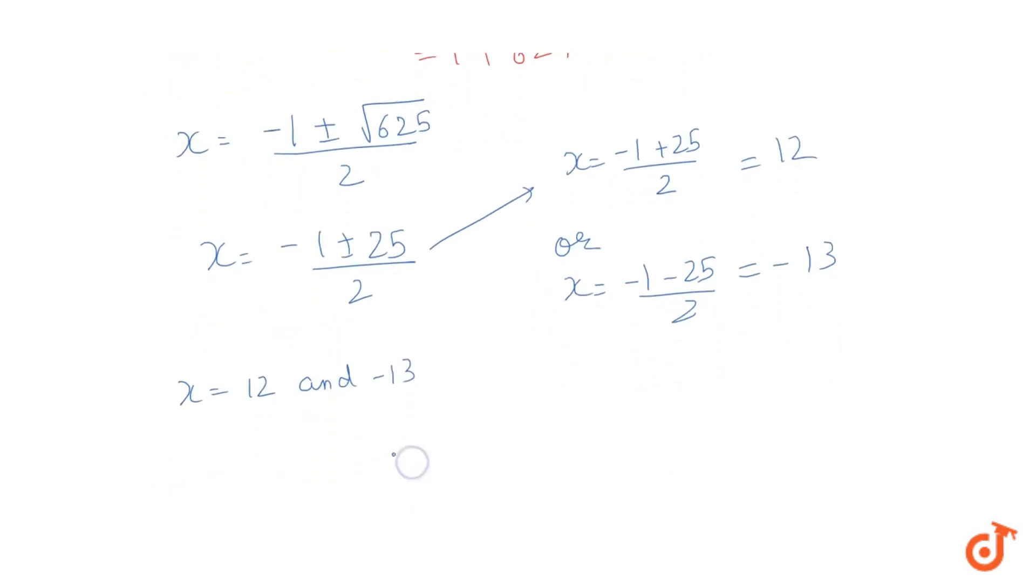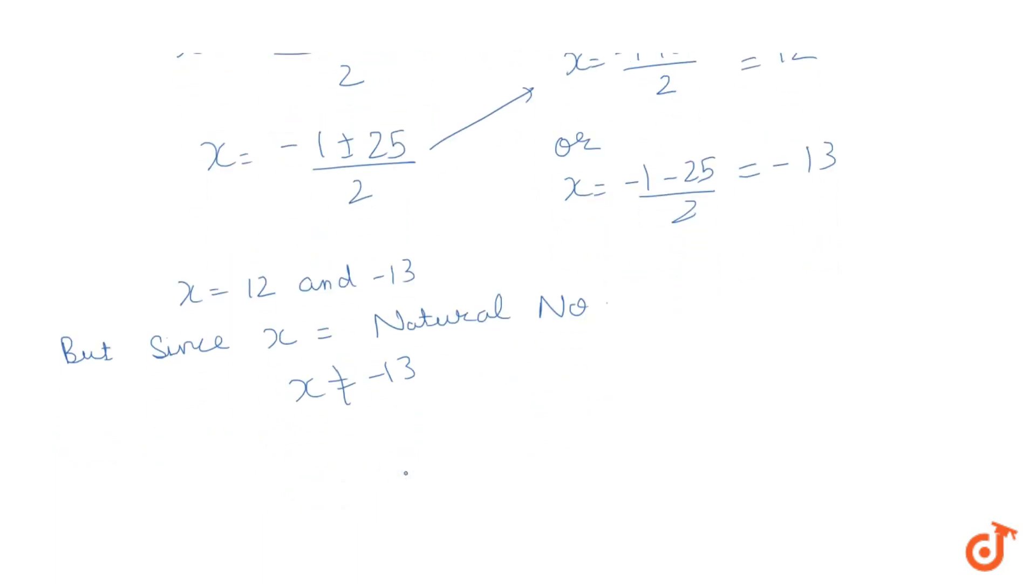But since x is a natural number, x cannot be equal to -30. So basically this is our final answer.